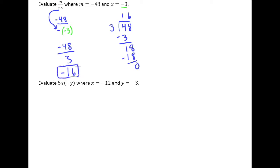In this next example, we have 5x times negative y. And remember, whenever a 5 is just next to an x, that means that we're multiplying.